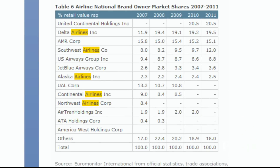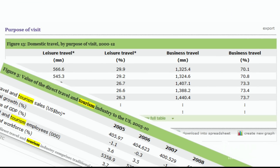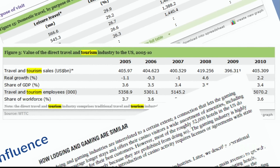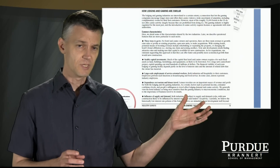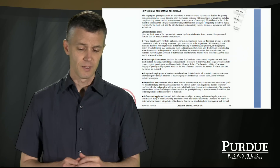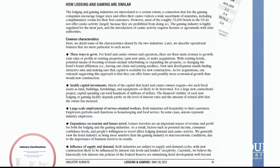You'll see things like market share and market size — how big the market is and who the major competitors and players are. This table shows trends in airline brands, and you can see some have been doing much better than others over a five-year span. You can look at actual market size both in numbers, percent, and dollar value. The other important factor within an industry overview are the trends. This sample from a market report covers key trends in lodging and gaming, showing a variety of ways to grow, large-scale employment of service-oriented workers, and how supply and demand are being influenced.